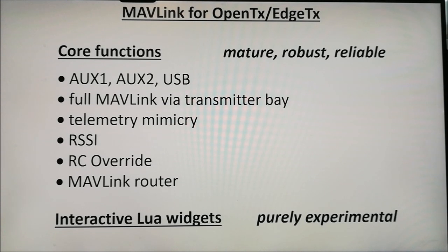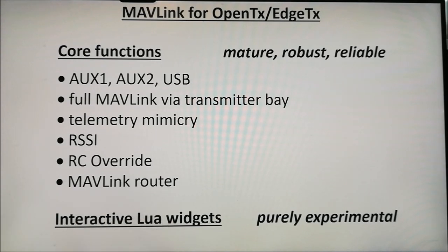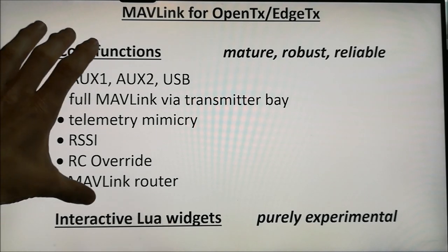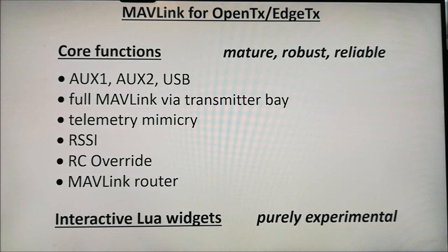Concerning the code additions which are needed to get all this Muffling and Lua widget stuff, these can be broadly classified into two categories which I've called the Core Functions and the Interactive Lua Widgets Functions. The code additions for the Core Functions part is really what you need to get all this Muffling stuff up and running.